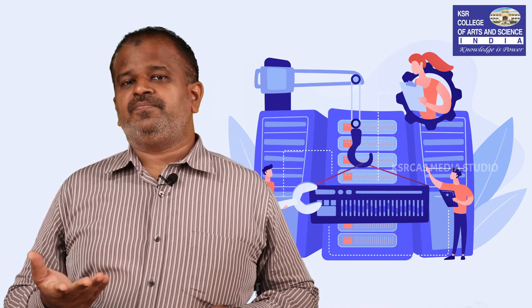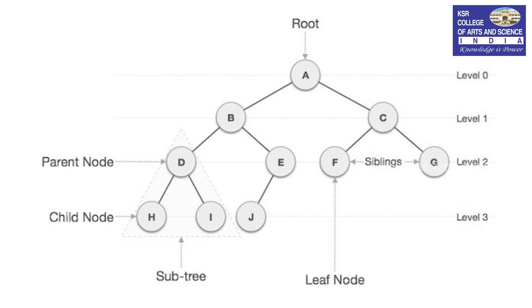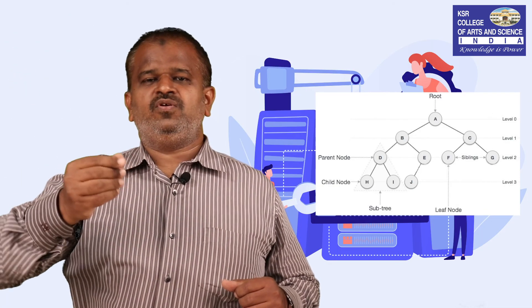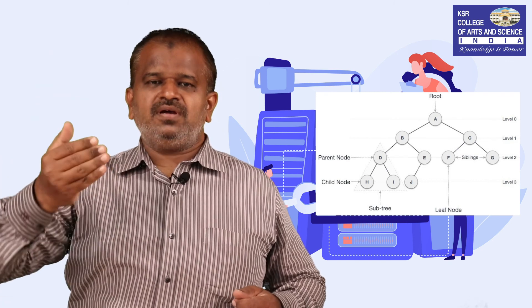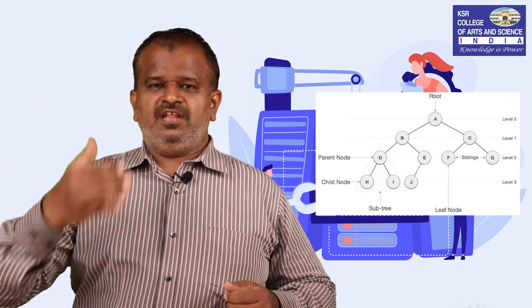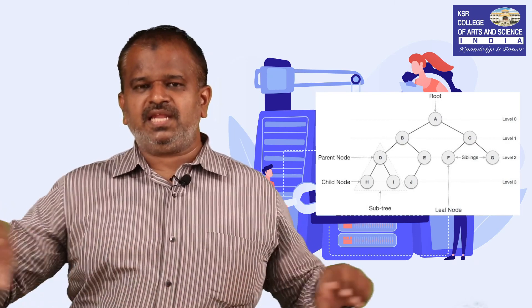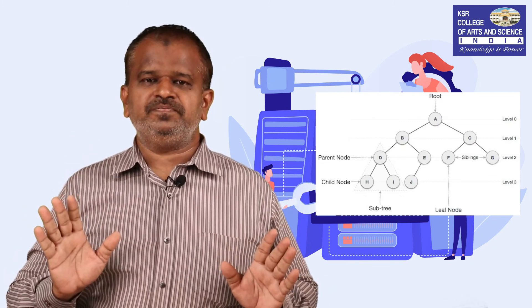The next non-linear data structure available is tree. A tree, as the name itself indicates, first starts with a root node, then comes the leaf node. The root node is connected by means of edges. The root node can have n number of leaf nodes. The leaf node can again have leaf nodes. The last collection of nodes, we call it as child nodes. We will discuss non-linear data structures in the next coming sessions.